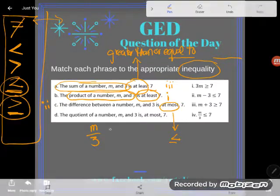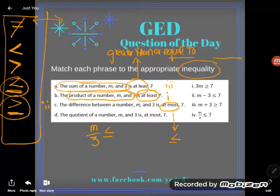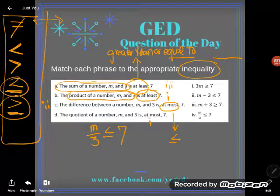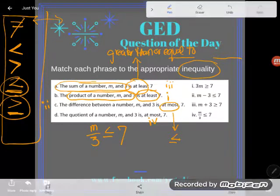And again, it's at most, so it would be okay to be less. It would be okay to be equal 7. So M over 3 is less than or equal to 7 matches with D. And this one is a little trickier. So D is 4. Great.